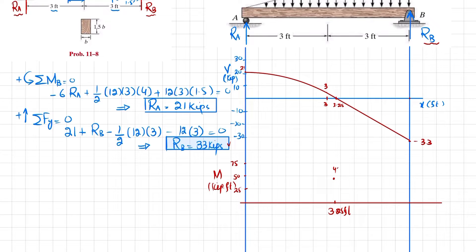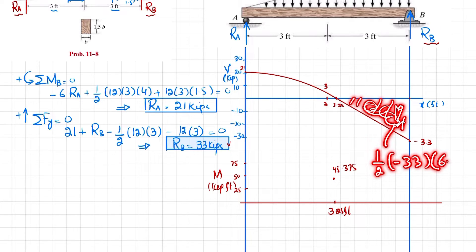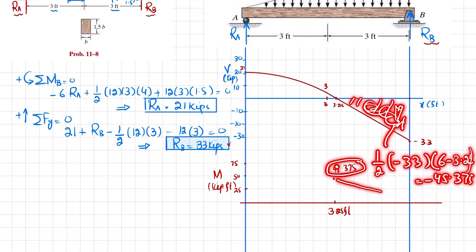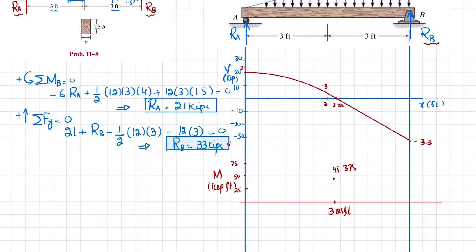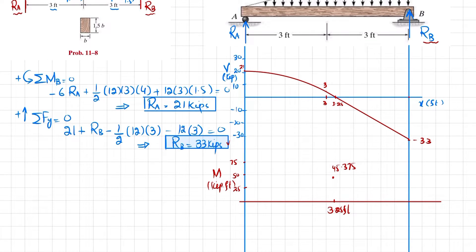The maximum bending moment at x = 3.25 feet is 45.375 kip·ft in magnitude. The bending moment diagram rises from zero at A as a third-degree curve (since the shear is second-degree over the first segment), reaches the maximum of 45.375 kip·ft at 3.25 ft, then decreases back to zero at B.